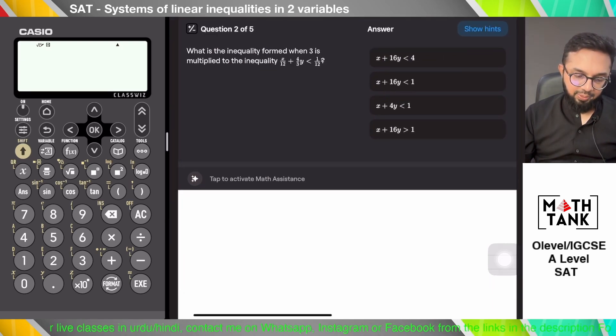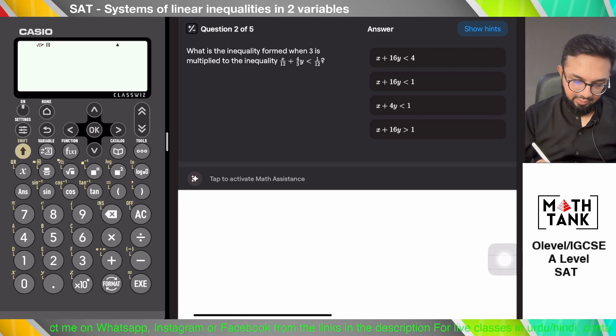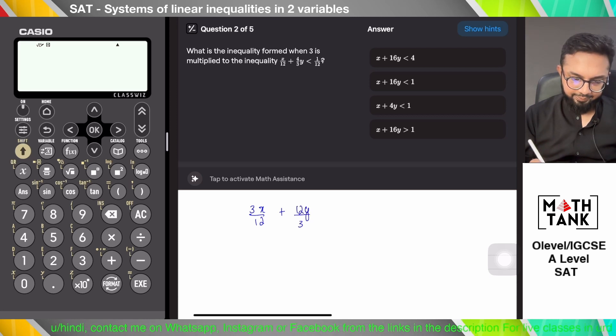What is the inequality formed when 3 is multiplied to the inequality? So I want to multiply everything by 3. That's interesting. So 3x over 12 plus 12y over 3 is less than 3 over 12.